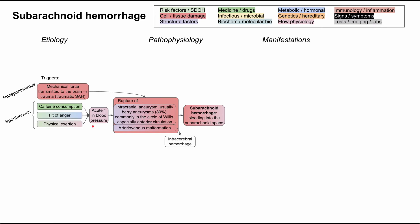Some examples of spontaneous triggers include caffeine consumption, which can increase your blood pressure. Fits of anger can make you anxious, increase your blood pressure, and affect hormones that raise blood pressure. Physical exertion — if you suddenly get up out of shape and start moving — can cause a rapid increase in blood pressure that your body can't compensate for, triggering rupture of an aneurysm or arteriovenous malformation.